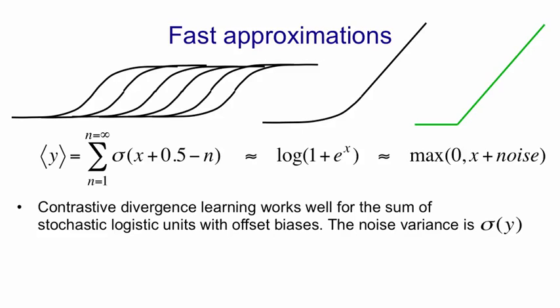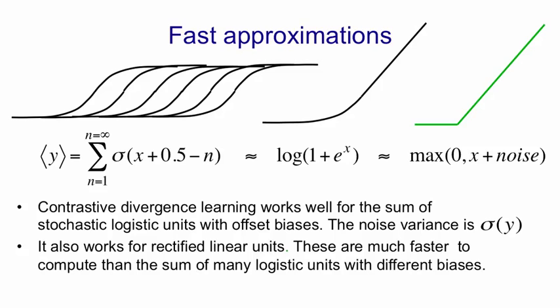Contrastive divergence learning works well for the sum of a bunch of stochastic logistic units with offset biases. In that case, you get a noise variance that's equal to the logistic function of the output of that sum. Alternatively, we can use that green curve and use rectified linear units. They're much faster to compute because we don't need to go through the logistic many times. And contrastive divergence works just fine with those.